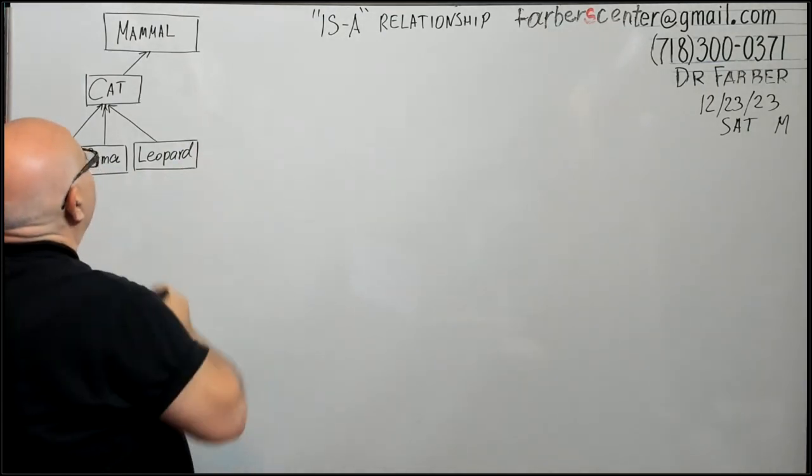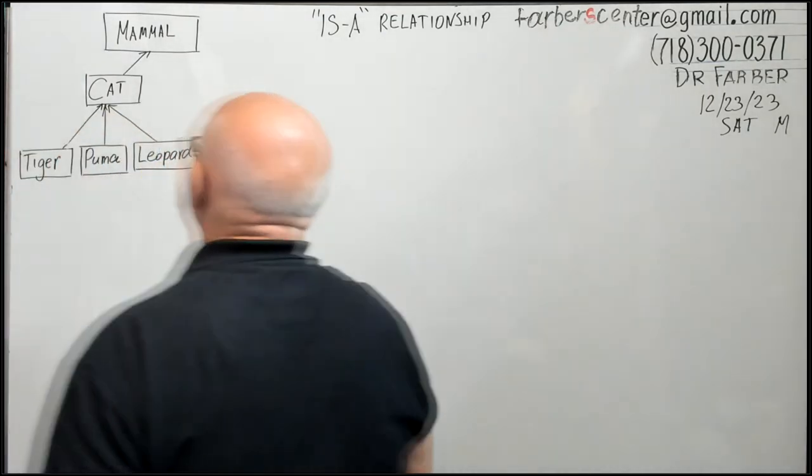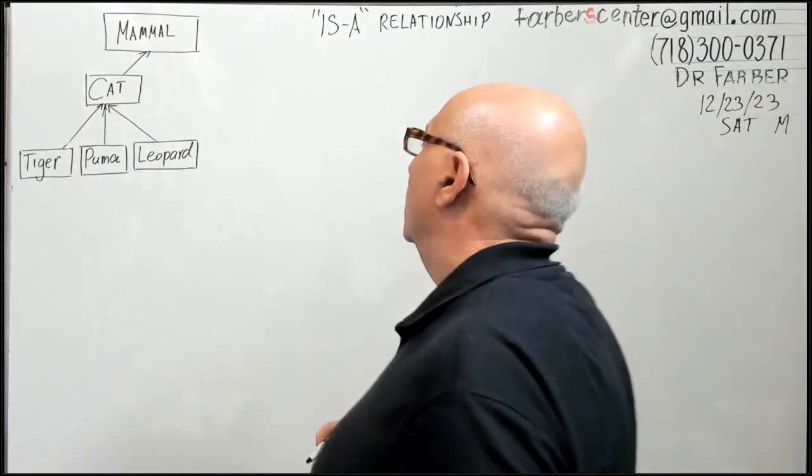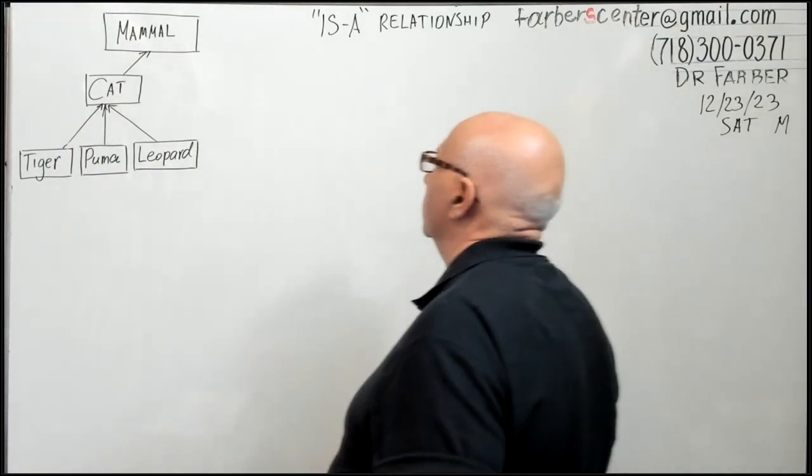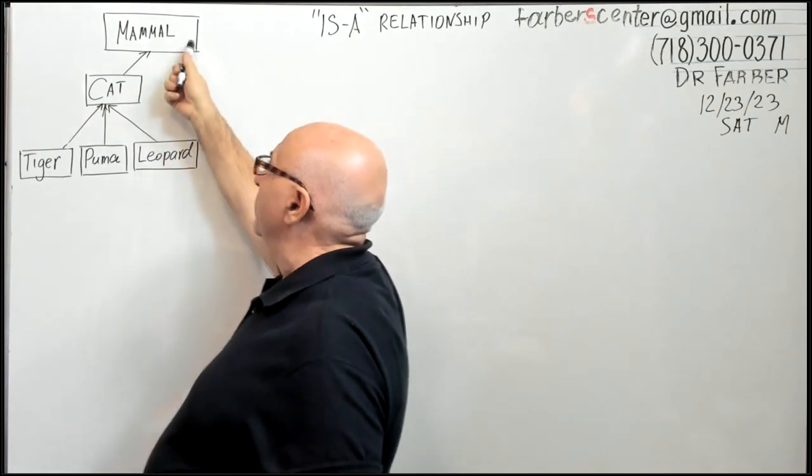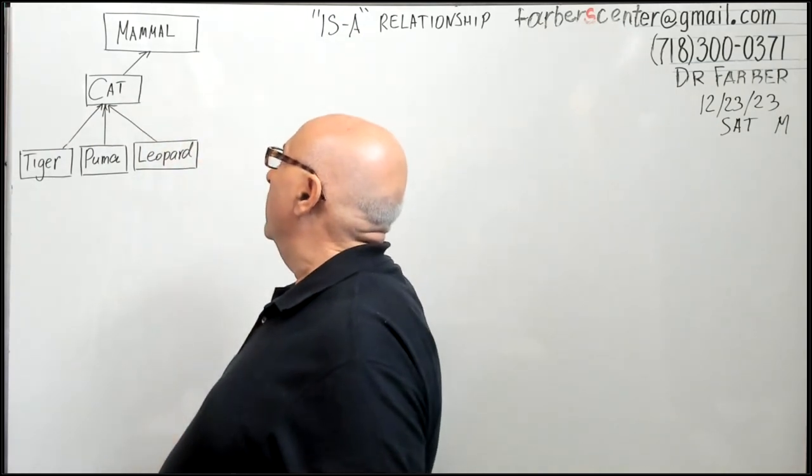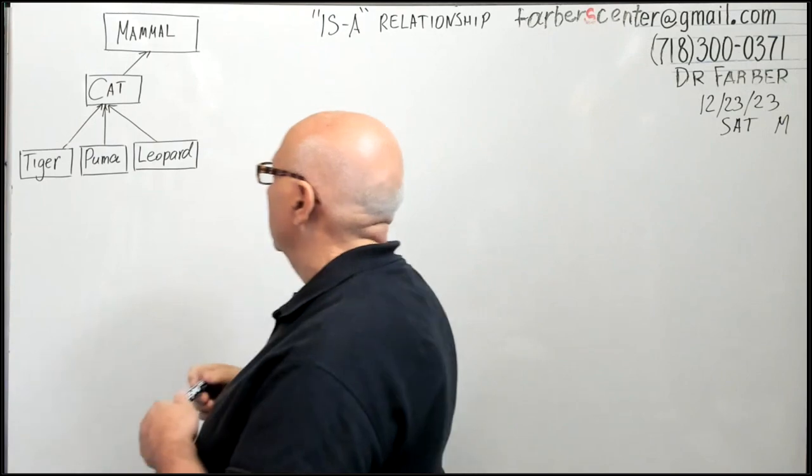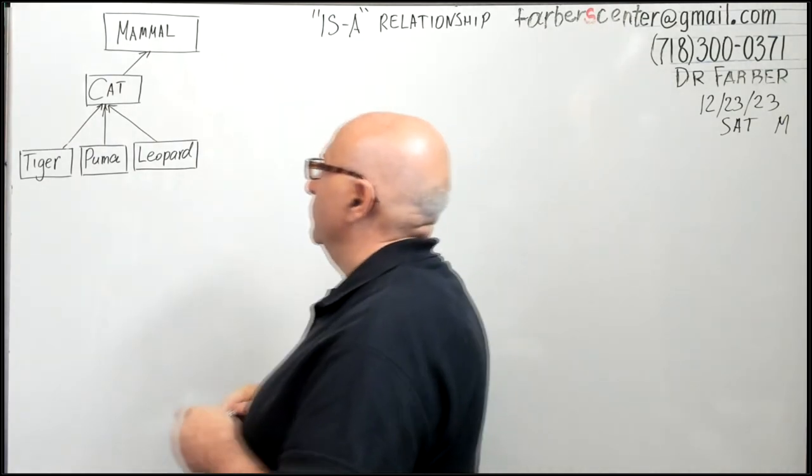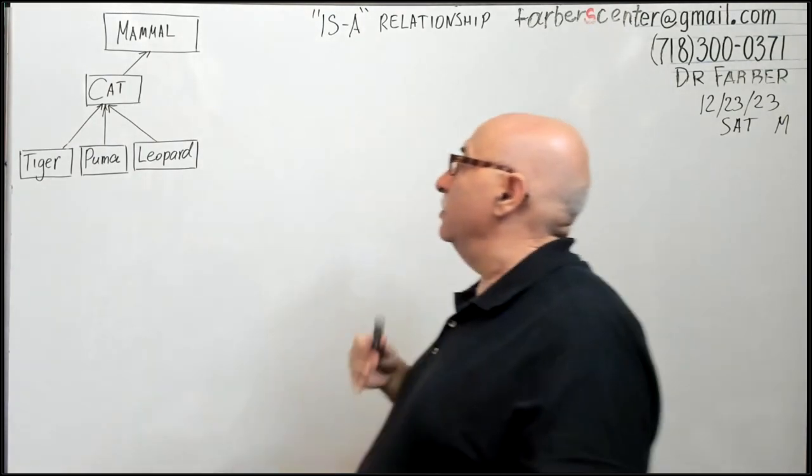The arrow goes from down to top. In this classification, 'is-a' relation, mammal is a parent and this is a child. Sometimes you name it parent-child relationship.